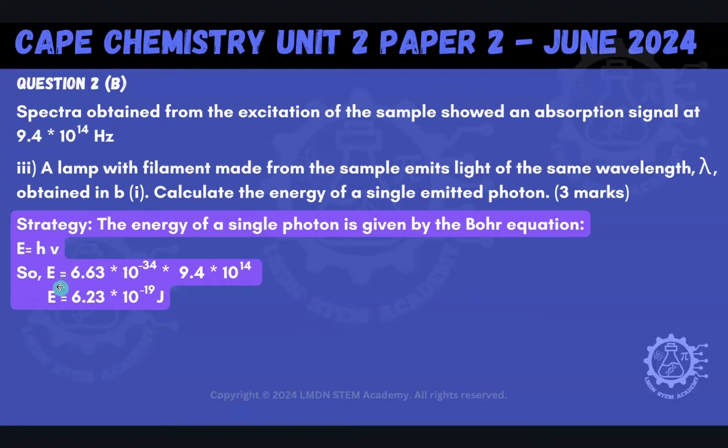And so that's exactly what I did. So here I have E is equal to your Planck's constant times your frequency, which is from up here. And with that, we end up with the energy being equal to 6.23 times 10 to the minus 19 joule. And that's our answer. Remember, the Bohr equation gives you the energy of a single photon. So if they're asking you about just one photon, this is what you would do.